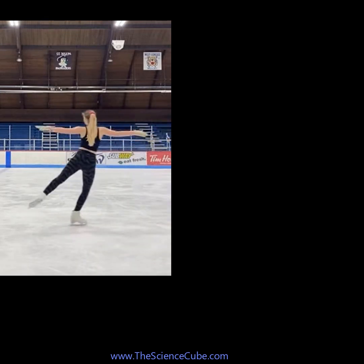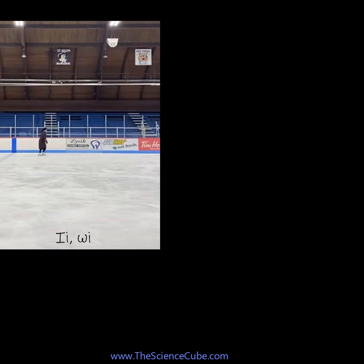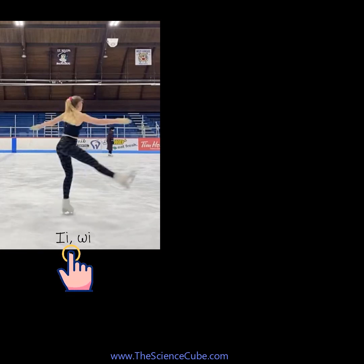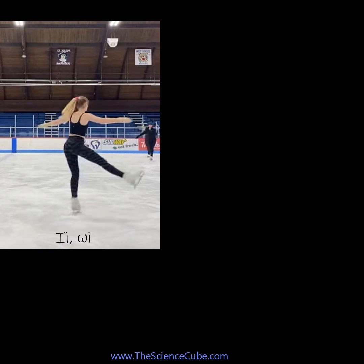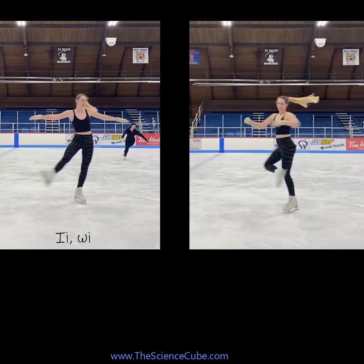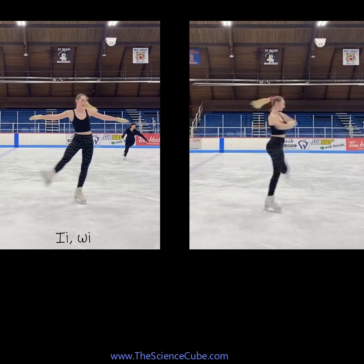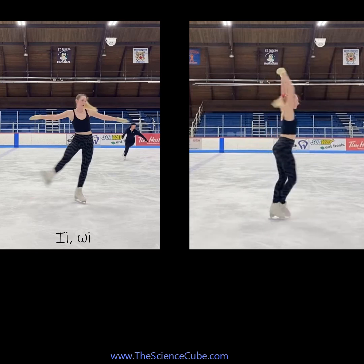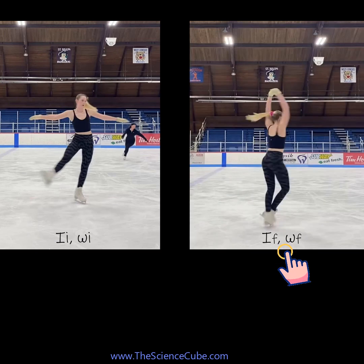What you have here is an ice skater rotating at a slow initial angular speed omega i, and her hands are outstretched. Now when she pulls her arms and legs in, what really is happening is that her rotational inertia is reducing from its initial value I initial to a smaller value I final, simply because her body mass has now moved closer to the axis of rotation.